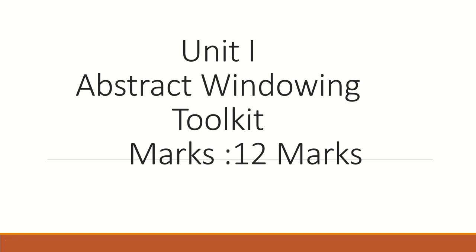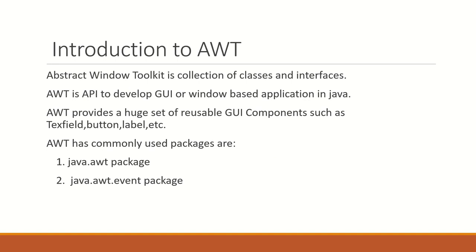Hello students, welcome to my channel Easy Learning with Tejal. Today we learn Unit Number 1 of Advanced Java programming. The name of Unit 1 is Abstract Windowing Toolkit, and this unit is for 12 marks. The goal score for this is 22517.